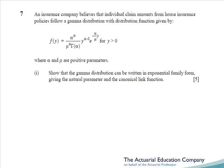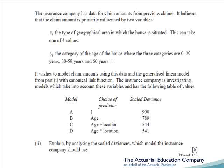Note that the question specifically asks us to give the natural parameter theta and the canonical link function, which is actually listed on page 27 of the tables. In part 2 of the question, we have to choose between different models by considering the scale deviants. A large drop in scale deviance implies the model is a significant improvement, whereas a small drop implies it's not. We can check if the change in scale deviance is more than the 5% critical value from a chi-squared distribution where the degrees of freedom is the difference in parameters for each model, or use the approximate formula where the change in scale deviance is more than twice the change in the number of parameters.